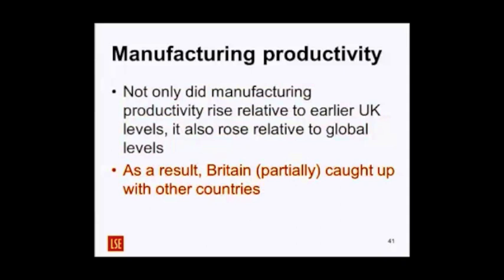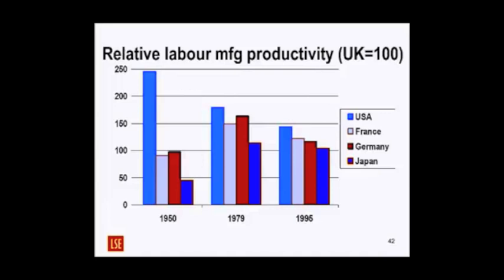Relative labour manufacturing productivity compared internationally: this is Britain at 100. In 1950 — immediately post-war — Japan and Germany had been bombed to oblivion and France occupied, so they're not doing as well as Britain. By 1979, everyone is doing better than Britain. The impact of the Thatcher Revolution and Major government shows some improvement in manufacturing, but everyone is still doing better than Britain.